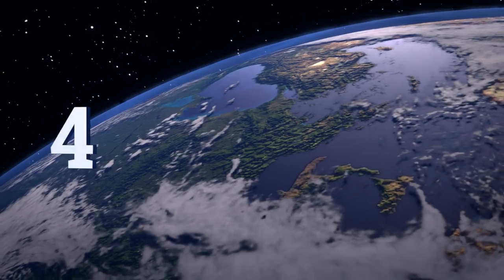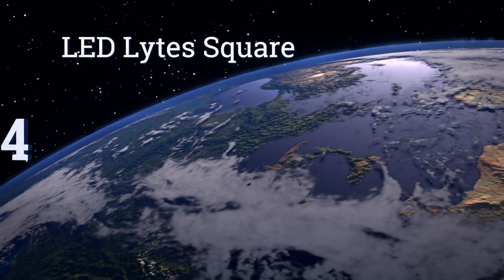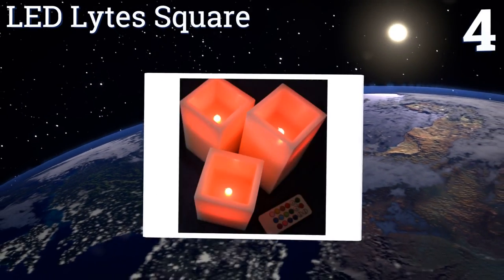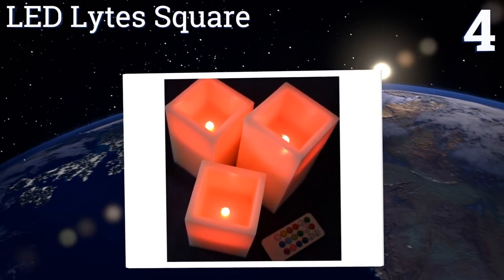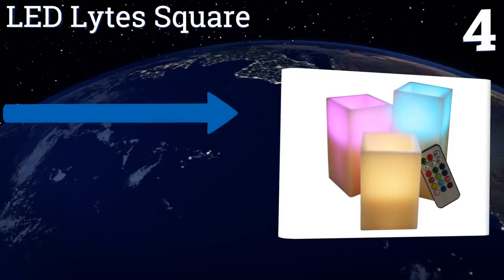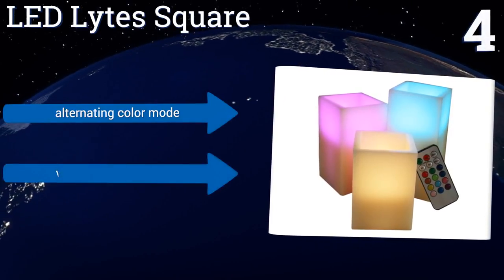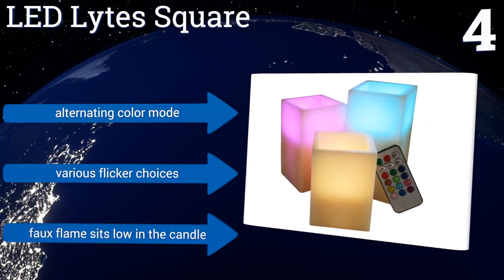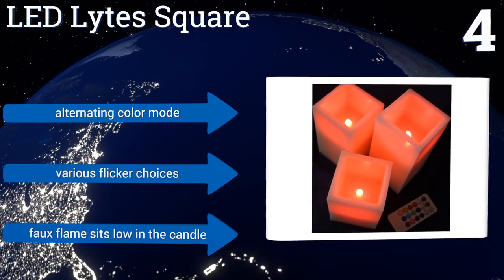At number four, the unique shape of the LED Light Square gives these a distinctly modern look that's fitting for an art gallery opening or a swanky lounge. Each one is exactly one inch taller than the last, which creates intrigue when you stagger them next to each other. They feature an alternating color mode and various flicker choices. The faux flame sits low in the candle.